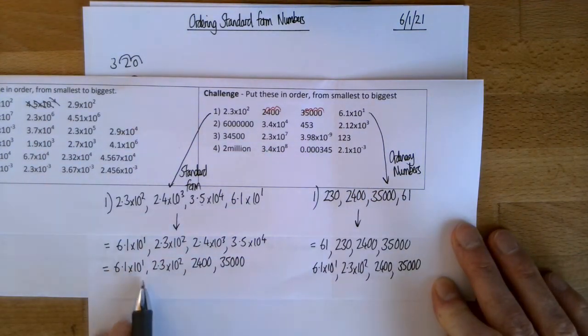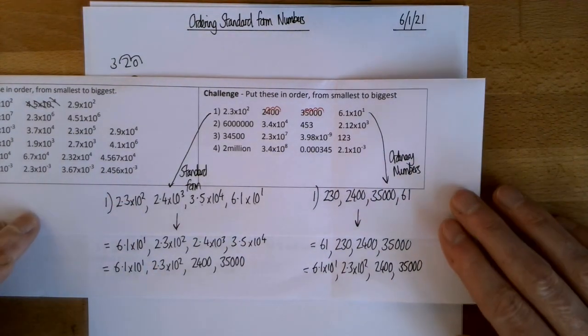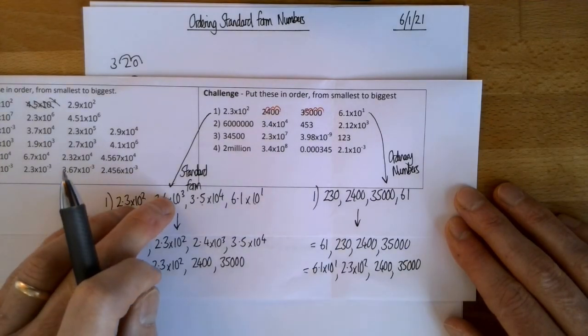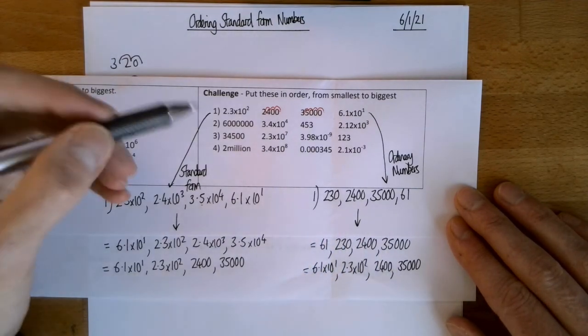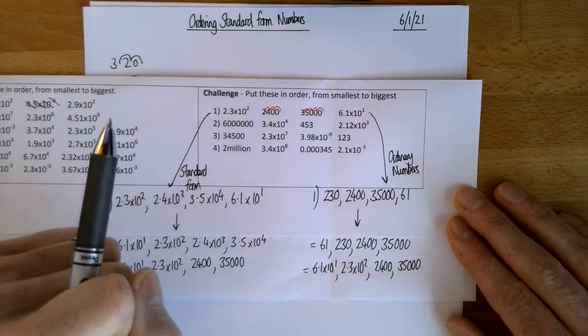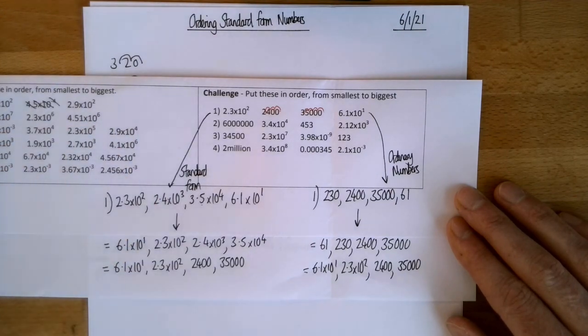Now, I've got exactly the same answer using the two different methods. So you don't have to use both methods. You can use either that or that. It's entirely up to you. But you've got to make that choice. You've either got to change all the numbers into standard form and order them that way. Or change them all to ordinary numbers and order them that way. So I'd like you to have a go at 2, 3 and 4. I'm going to pause the video. I'm going to show the answer to 2 and 3. And you're going to send me a photo of your answer to 4. Pause the video now.